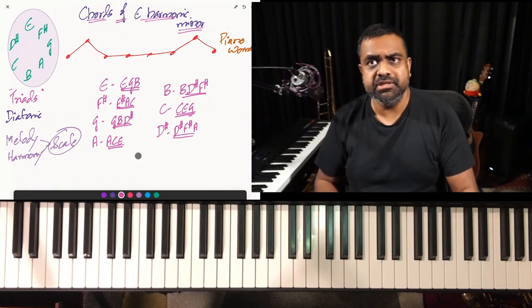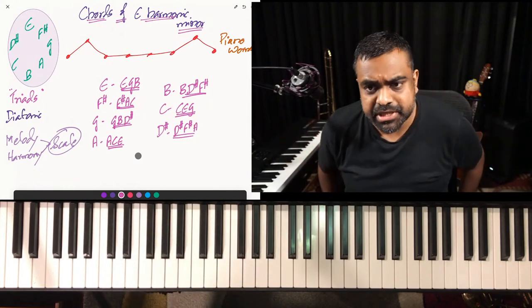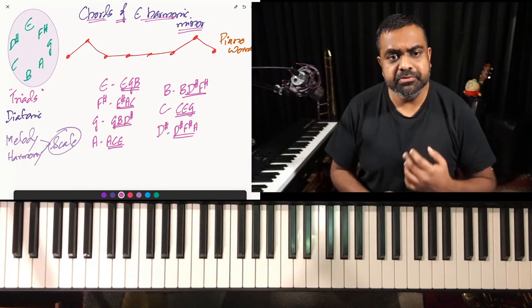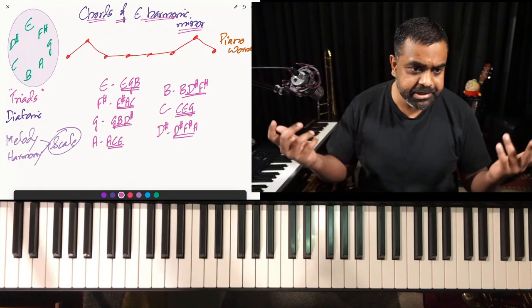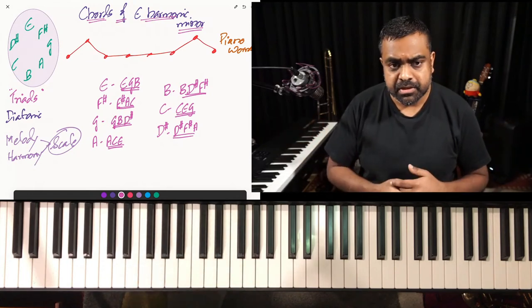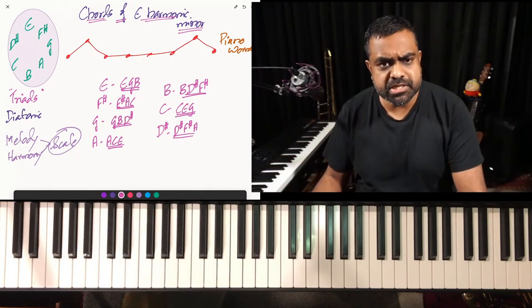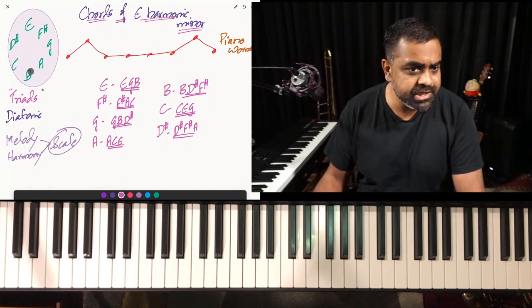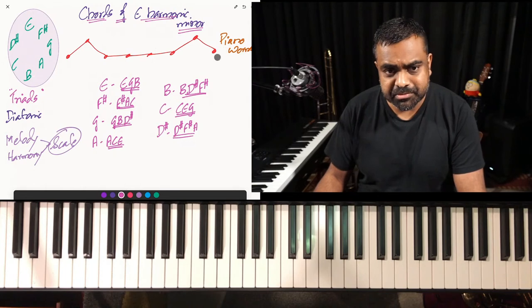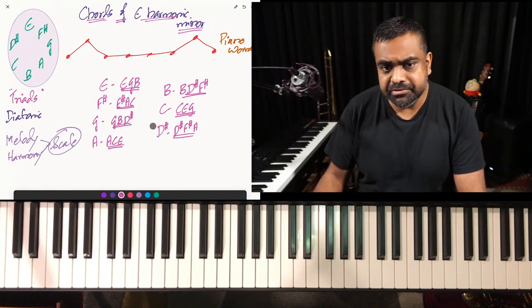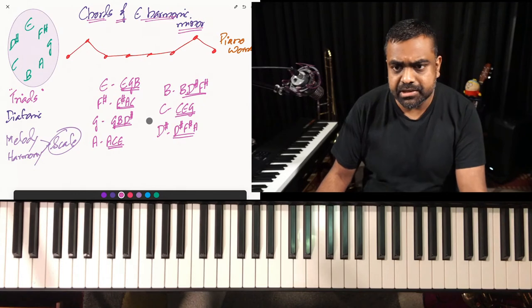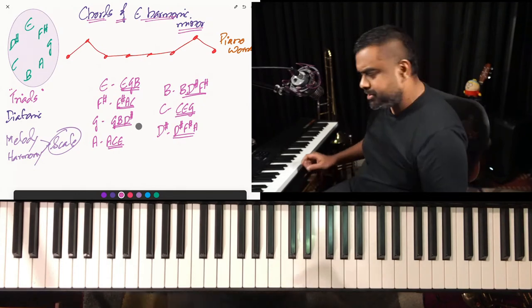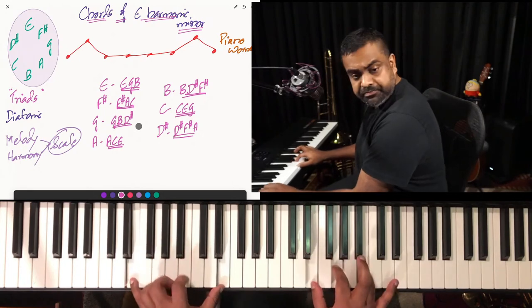Let's get acquainted with all these triads and hear how they sound. After we understand how they sound, we'll name them, classify them, and then try to build some chord progressions. Remember we are in the key of E harmonic minor. Step one: draw it in a circle; draw the piano worm; draw all your available triads; then we can get cracking.